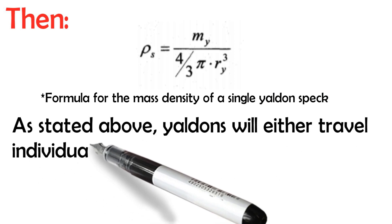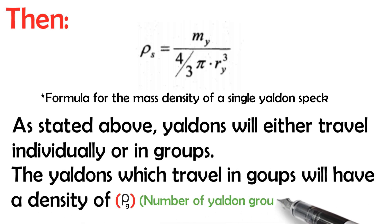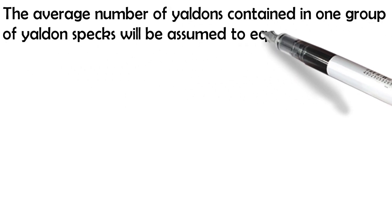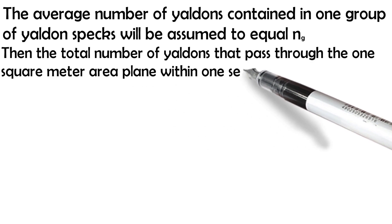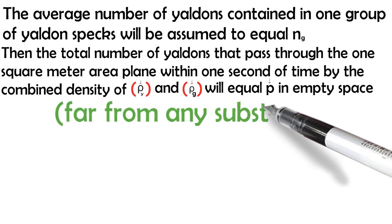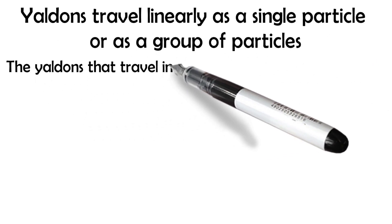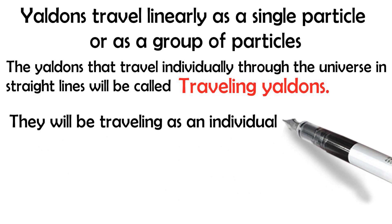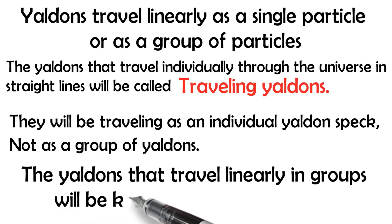Yaldons will either travel individually or in groups. The Yaldons which travel in groups will have a density of raw G — number of Yaldon groups divided by meters squared per second. The average number of Yaldons contained in one group will be assumed to be equal to NG. The Yaldons that travel individually through the universe in straight lines will be called traveling Yaldons, while the Yaldons that travel linearly in groups will be known as traveling groups.